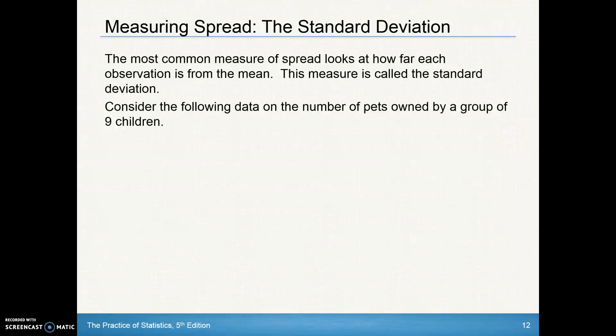We're going to continue with section 1.3 from chapter 1, and we're going to be looking at a new measure of spread called the standard deviation. It is the most common measure of spread, and it looks at how far each observation is from the mean. That's why we call it the standard deviation.